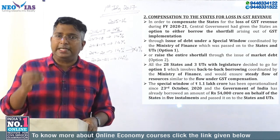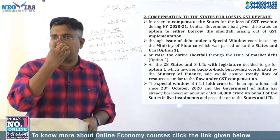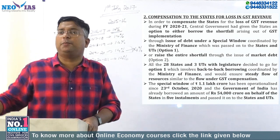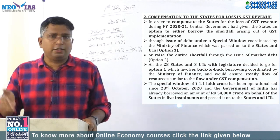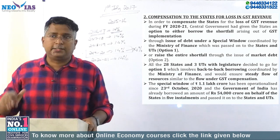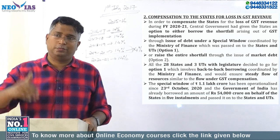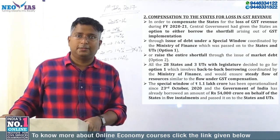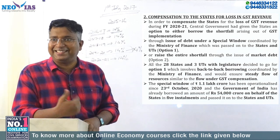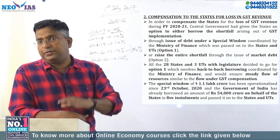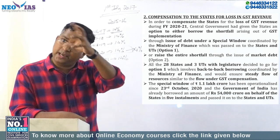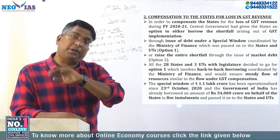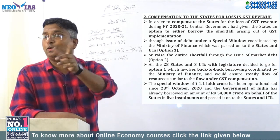One option is that the state finds out its entire GST shortfall and borrows from the market itself. The center tells the state: you borrow from the market yourself, you pay the interest, but the principal amount we will give you through the GST Compensation Fund on a regular basis. To understand option one, you first need to understand option two. And all the states preferred option one — not option two.